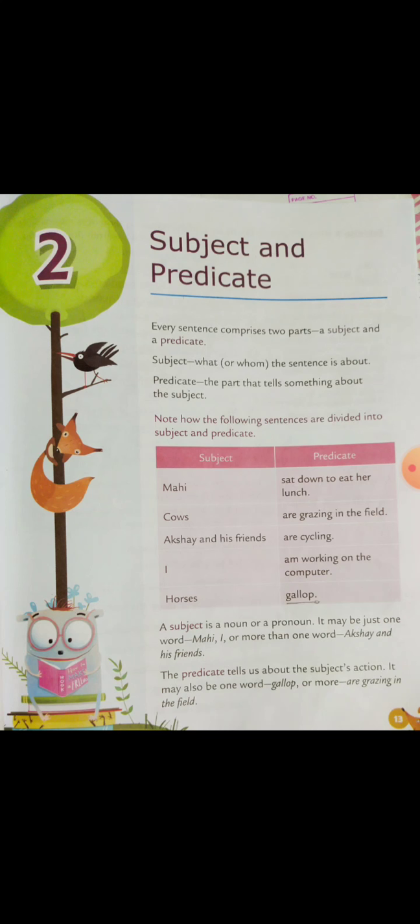For example, 'cows' and 'I' are both one-word subjects, whereas 'Akshay and his friends' is more than one word. The predicate tells us about the subject's action. It may also be one word, for example 'gallop,' or it can be more than one word, like 'are grazing in the field.'